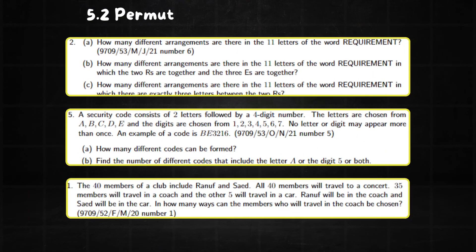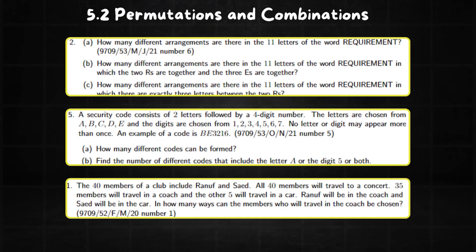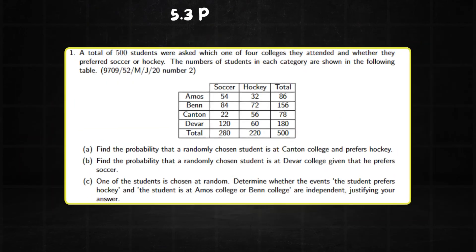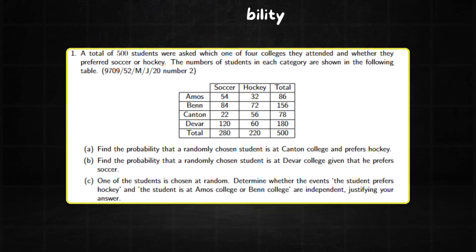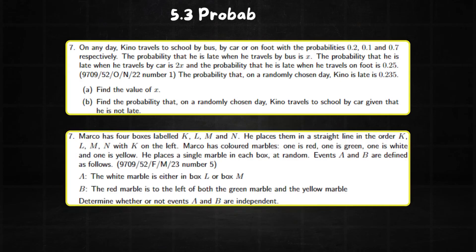For permutations and combinations, it's either an arrangement, a permutation, or a combination. For probability, the question where they give you a table with data, the tree diagram question, which usually comes with conditional probability, and the independent events question.